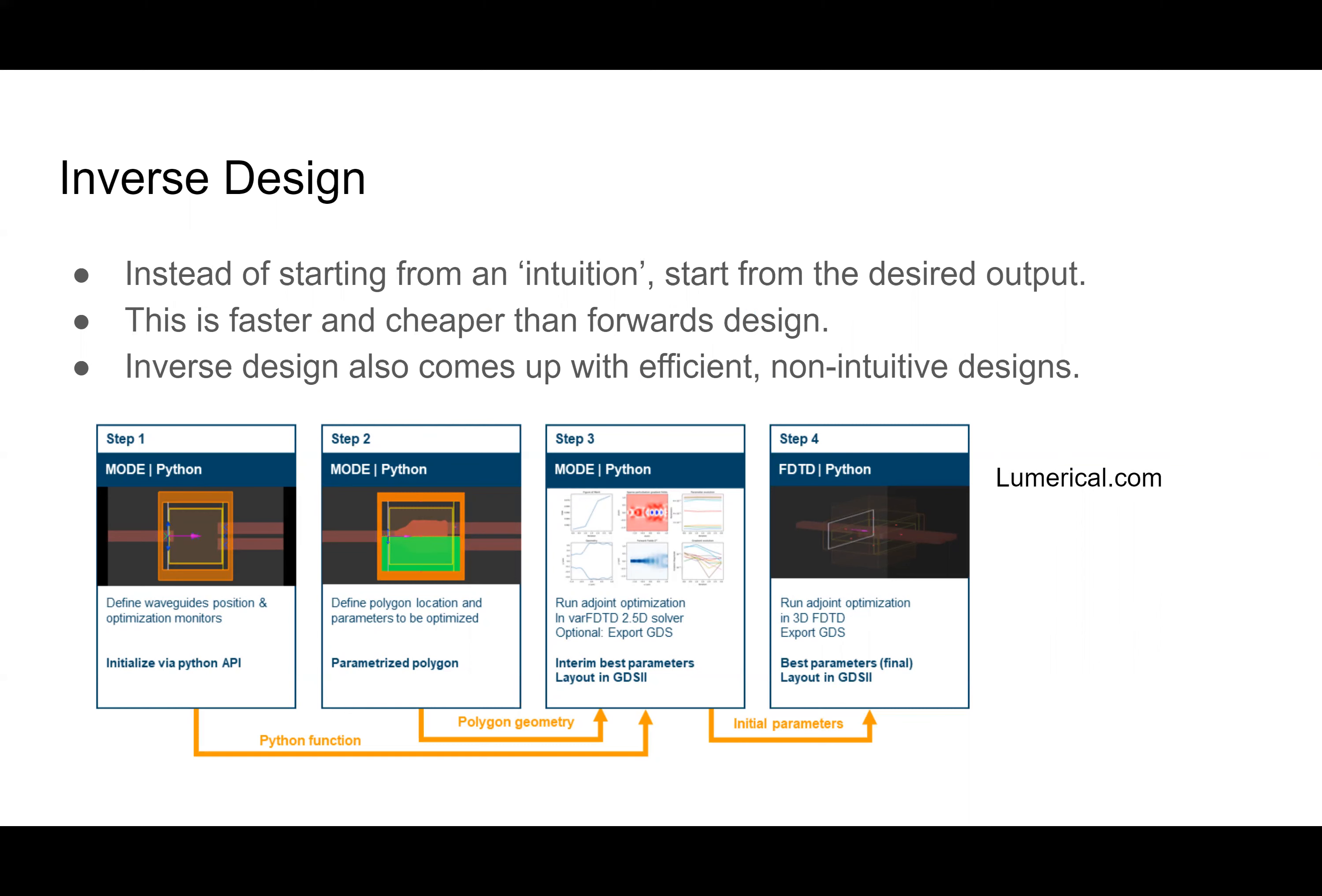Well, inverse design, you start with the output. So you use a computer algorithm and you essentially tell it, here are materials parameters and here are some geometry parameters that are optimizable and can be changed by the program. And then you also tell it, here's the desired output in the form of a figure of merit. And you can give it a target. I want the transmission to be this value at this point. And then you run the program. And at the end, your program will come up with a design. This is faster and cheaper than forward design because you don't have to iterate through so many different types. And it can also come up with non-intuitive designs, so something that a human just wouldn't think of to make.